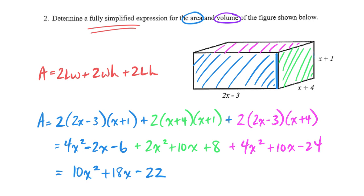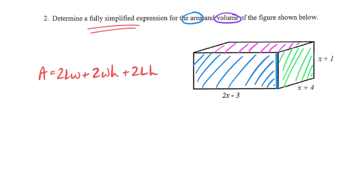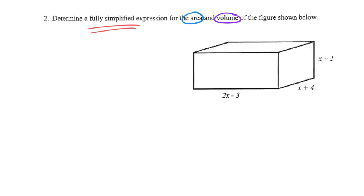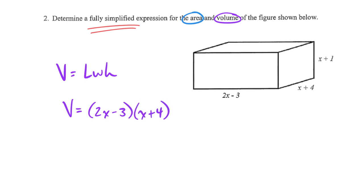Hopefully we matched up on that area expression. Now let's move on to volume. I'll erase and give us some space. For volume, I think it's the easier one to set up — most of us recognize the length × width × height relationship. So volume equals one dimension times another times the last: (2x − 3)(x + 4)(x + 1).